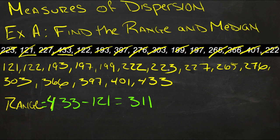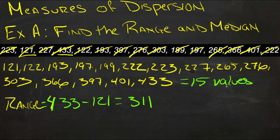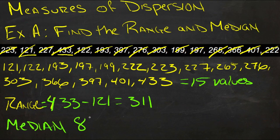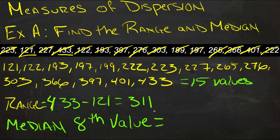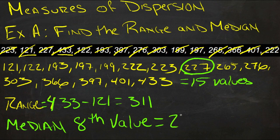Now we have to figure out how many numbers there are. Counting: 1, 2, 3, 4, 5, 6, 7, 8, 9, 10, 11, 12, 13, 14, 15 — so since there are 15 values, the median will be the 8th value from either direction. Counting to the 8th value: 1, 2, 3, 4, 5, 6, 7, 8 — that 8th value is 227. So the median is 227 and the range is 311.